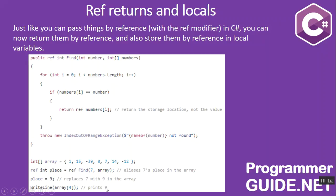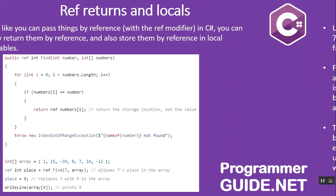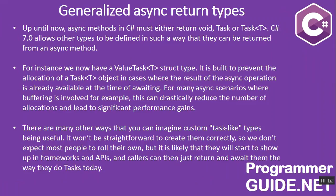Generalized async return types. Until now, async methods in C# must return either void, Task, or Task<T>. C# 7.0 allows other types to be defined so they can be returned from an async method. For instance, there is now a ValueTask<T> struct, built to prevent allocation of a Task<T> object in cases where the result of the async operation is available at the time of awaiting. For many async scenarios involving buffering, this can drastically reduce the number of allocations and lead to significant performance gains. Custom task-like types are likely to show up in frameworks and APIs, and callers can then return and await them just as they do Task today.